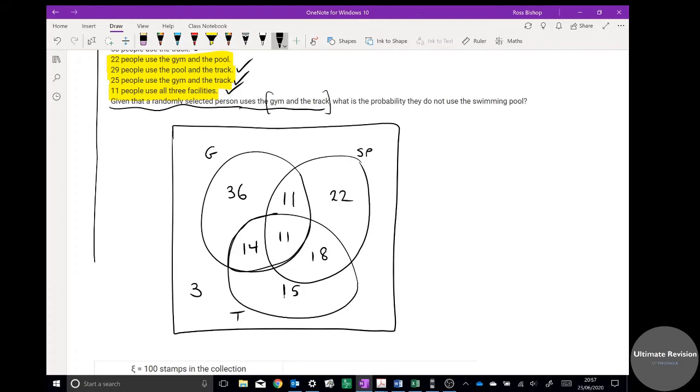It says given that a randomly selected person uses the gym and the track, so we know they use the gym and the track. Now at this point, gym and the track, I'm only going to consider the gym and the track bubbles. I'm just going to redraw that, is the only bubble I'm interested in, okay? The gym and the track, that blue bubble. I can ignore everything else in the whole Venn diagram, so I'm focusing on that blue bubble.